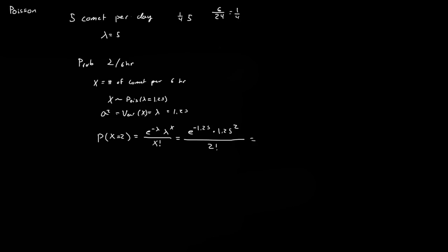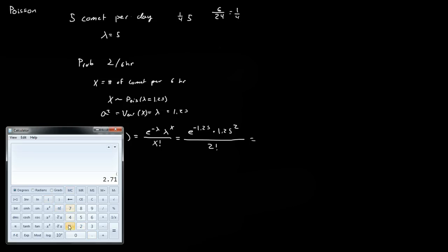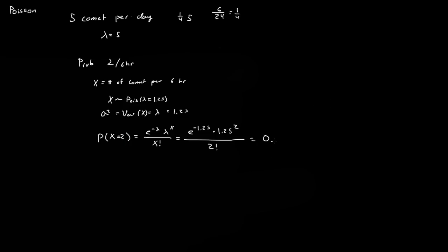Let's plug that into a calculator real quick. So we have 2.71 to the power of negative 1.25, times 1.25 to the power of 2, and then put brackets around all that and divide by 2. And what we get is 0.02246.